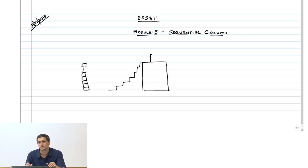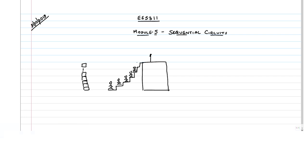What do these construction workers typically do? They basically stand on the stairs — one person standing on each stair and finally one person on top. The aim is to transport all 100 bricks up to the first floor without dropping even one. The safest way is to give one brick at a time, and assuming it takes one unit of time per person and there are n stairs, each brick takes n time units and the next brick is given only after that.